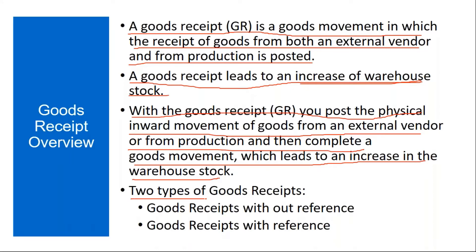Normally, two types of Good Receipt exist: Good Receipt without reference — without any reference document like a purchase order or a production order — and Good Receipt with reference, with a reference document like a purchase order or a production order. This has been discussed before, but we will cover it again today.